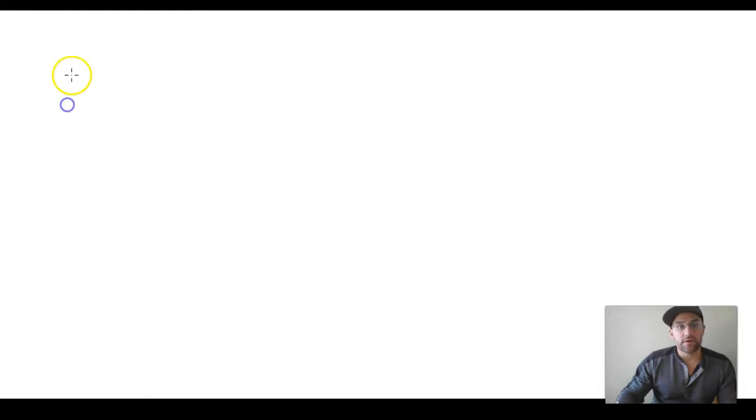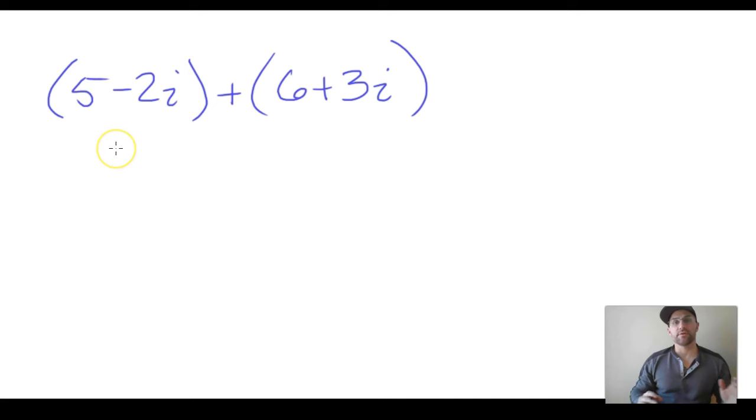5 negative 2i, and we're going to be plus 6 positive 3i. So we have components of complex numbers. We have the real part underlined in red here, and then in green we have the imaginary part.